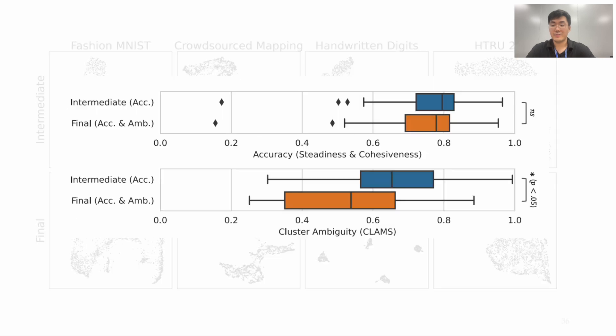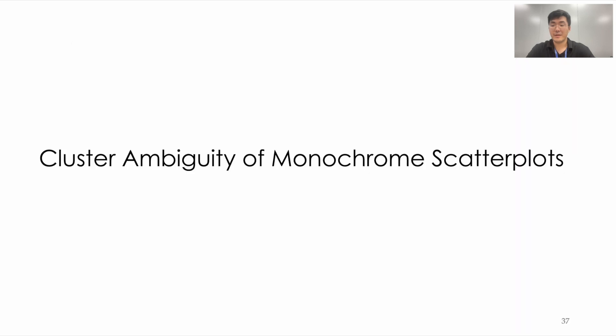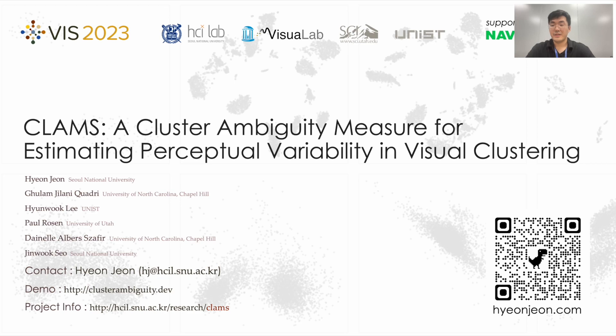The quantitative results also show that our application significantly reduces ambiguity while maintaining the level of accuracy. As future work, we would like to extend the notion of cluster ambiguity into general visualizations — for example, checking cluster ambiguity in a parallel coordinates plot. Thank you for watching the presentation. You can find additional information on the project page and enjoy the demo. We appreciate all reviewers, sponsors, and supporters who helped us shape this work. Thank you.